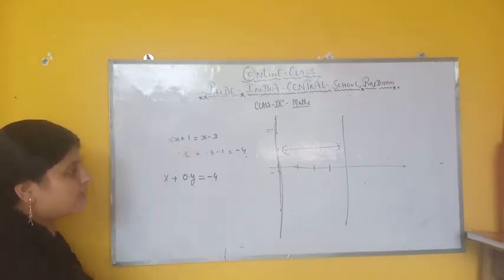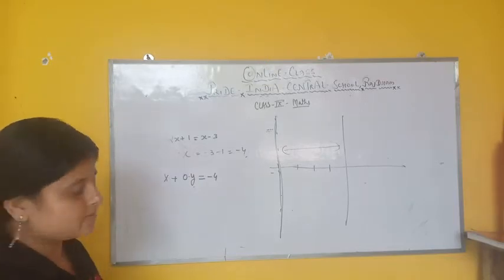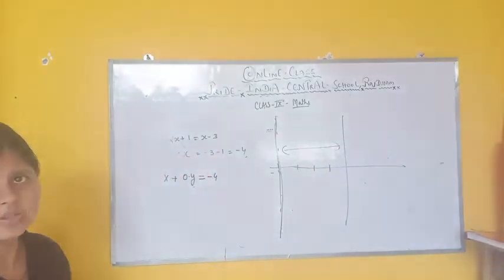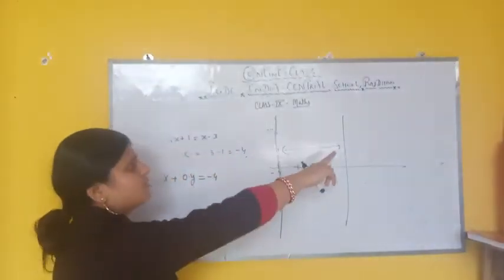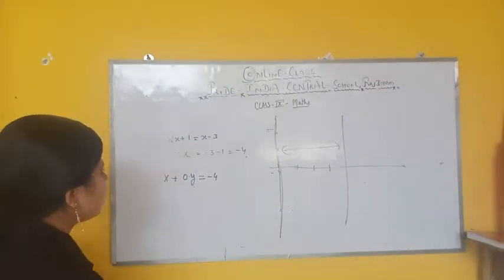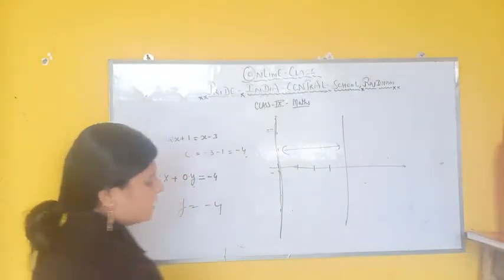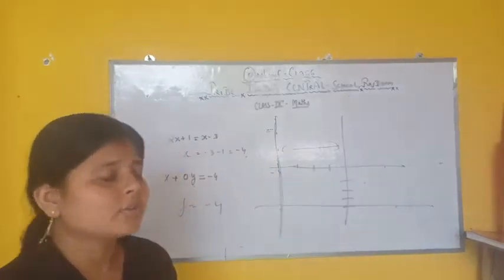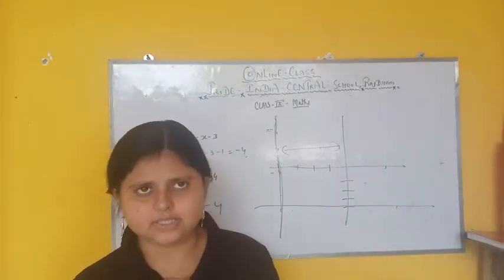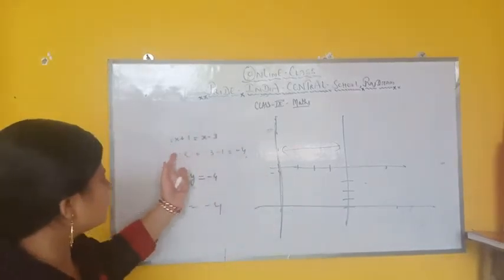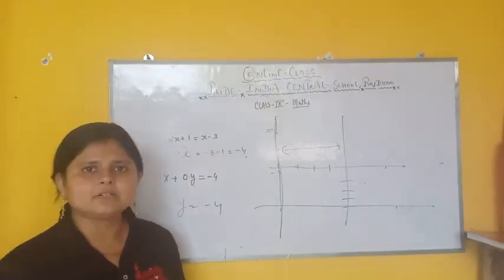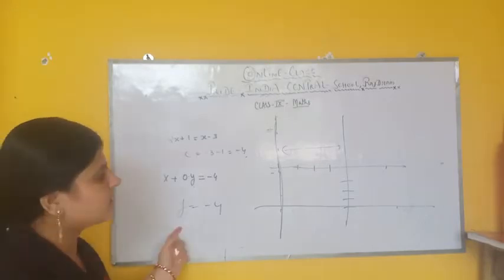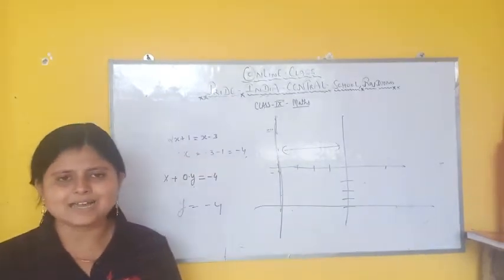जब y 0 हो और x-axis दी हो, तो कोई भी point x-axis पर होगा, और that line is always parallel to y-axis। Similarly अगर y is equal to minus 4 हो, तो minus 4 पर वो line x-axis के parallel होगी। तो जब भी x की term में equation हो, that line will always be parallel to y-axis, और अगर y की value given हो तो that line will always be parallel to x-axis। So in this way you will get the parallel line.